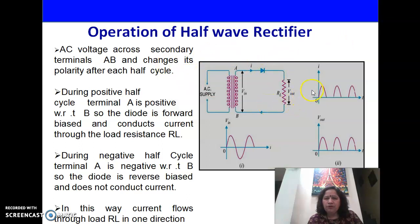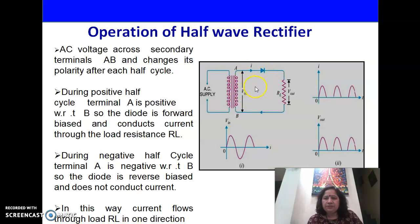So at the output, whatever is the input voltage, the same will appear across the output. During the negative half-cycle, terminal A is negative and terminal B is positive. As a result, the diode will be reverse biased — it will act like an open and no current will flow through the load resistance RL. So at the output, there will be zero voltage as well as zero current flowing through RL.